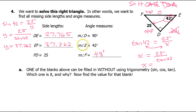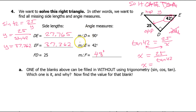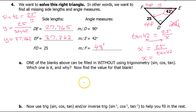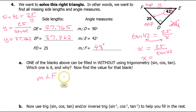And there, we have found all the missing sides and all the missing angles — so we solved the triangle. One of these blanks can be filled in without using sine, cosine, or tangent. Which is it? It was the measure of angle F. Which one is it and why? Because we can just subtract from 90.